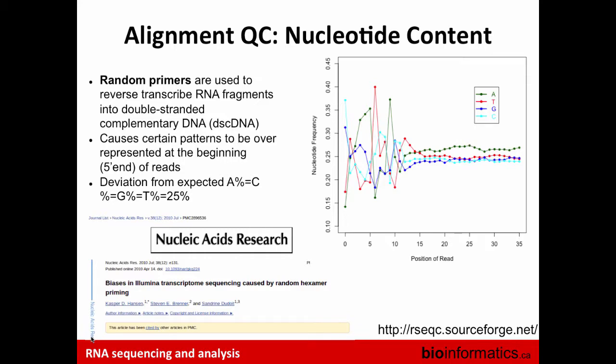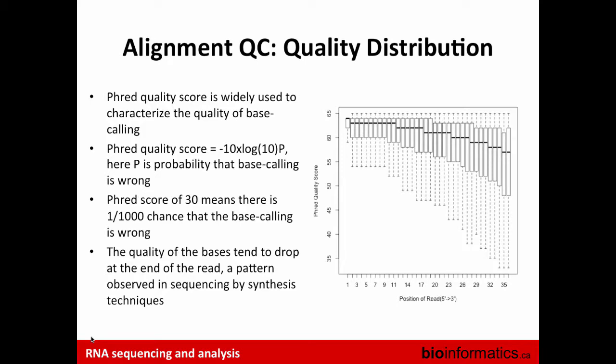Make sure you generate such plots before trimming to confirm you actually have that bias. For quality distribution, there are two types: base quality and mapping quality. The Phred quality score is simply -10 × log10(p), where p is the probability that the base call is wrong. A Phred score of 30 means a 1-in-1000 chance the base call is wrong. Usually 30 is a good threshold for picking good quality reads — anything higher gives more accurate calls.